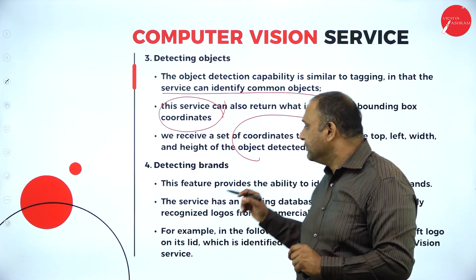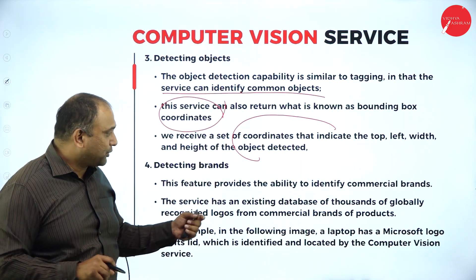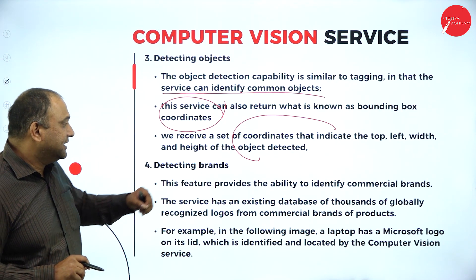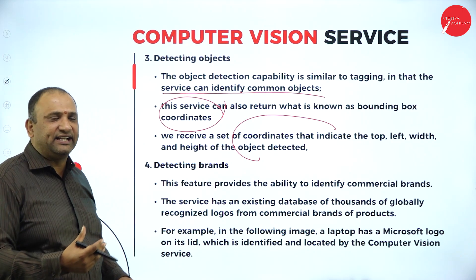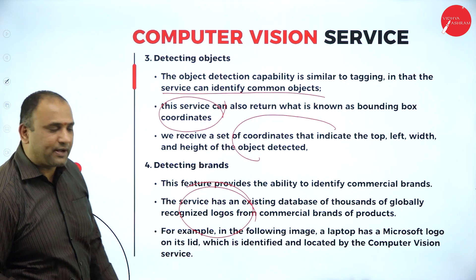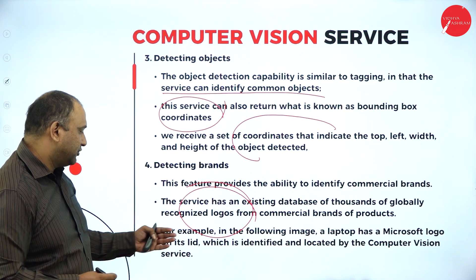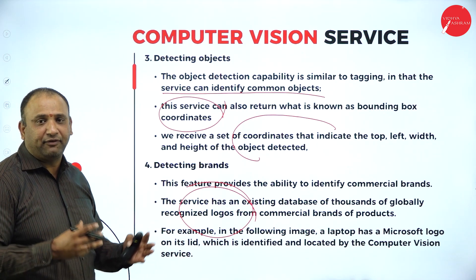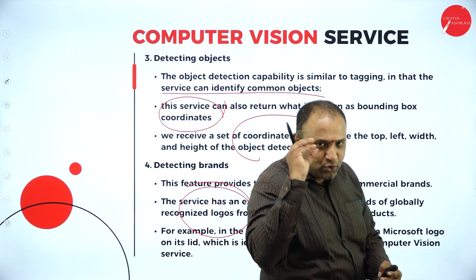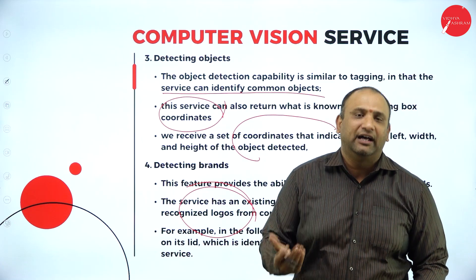Detecting of brands is a very important feature. It provides the ability to identify commercial brands. The service has an existing database of thousands of globally recognized logos from commercial brands and products. For example, a laptop with a Microsoft logo and its lid can be identified. Similarly, Apple, Bose, or Microsoft — just using that tag, that picture, that image, you will be able to identify a lot of things.